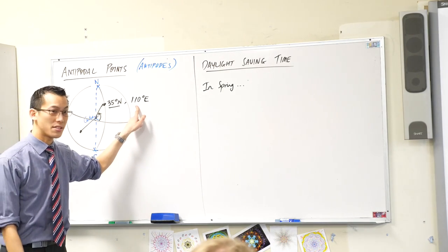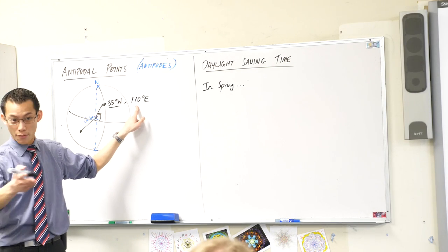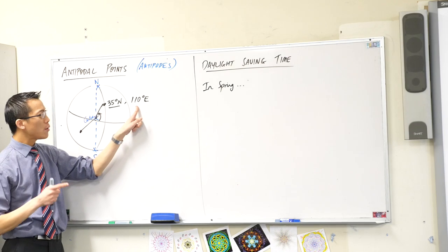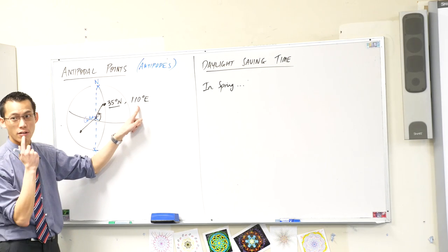This is 110 degrees east. 110 degrees east of what? Of the prime meridian, of the Greenwich longitude. So if I were to travel, which direction do I need to travel in to get to Greenwich?